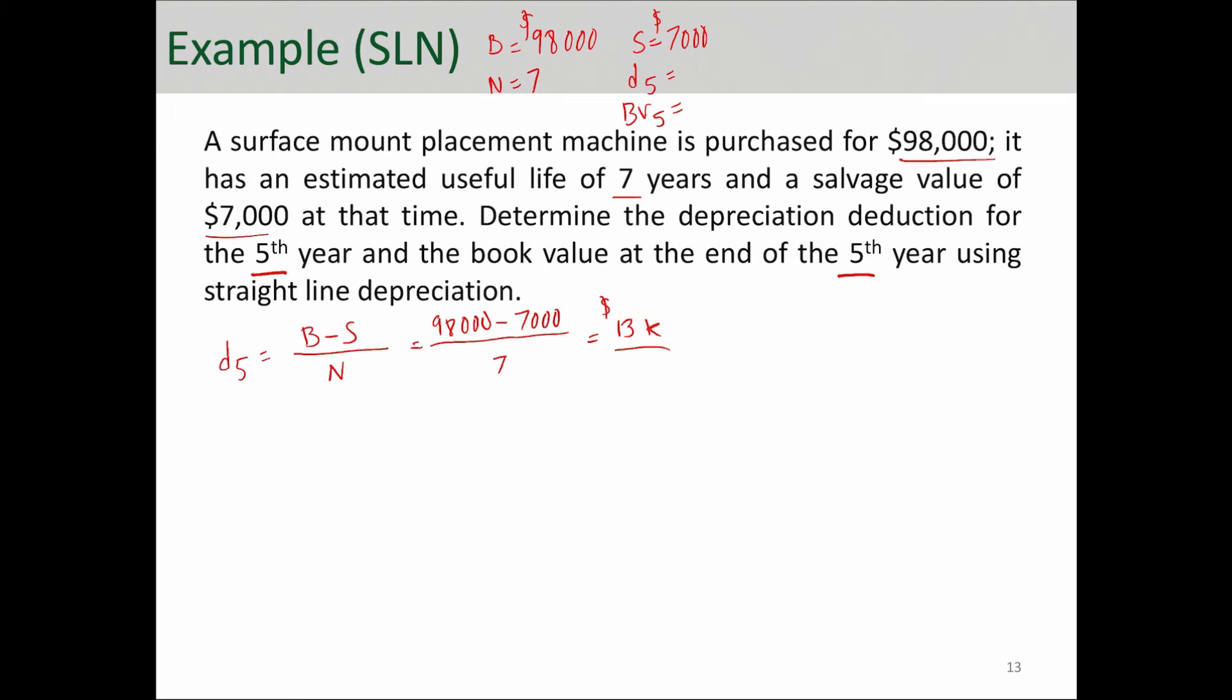That can be part of your deduction, so you can pay less taxes by reducing your taxable income. And now we need to calculate the book value at the end of year five.